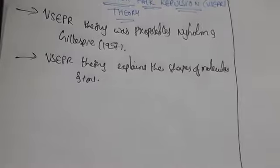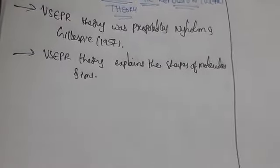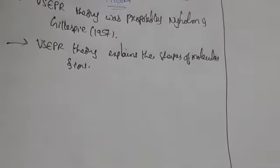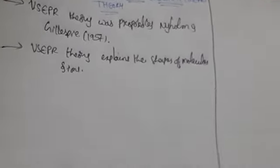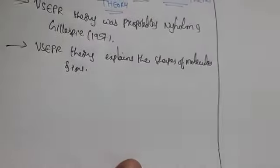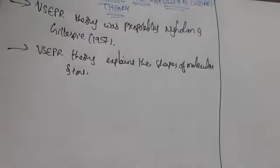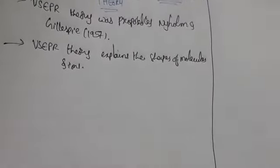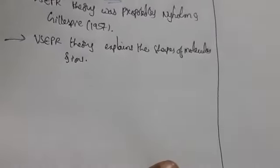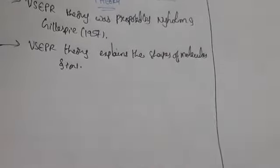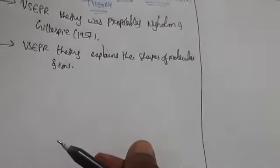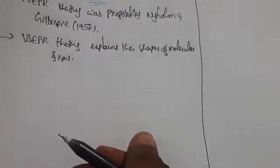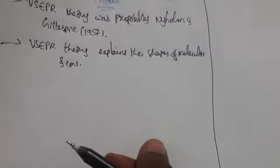According to VSEPR theory, the shape of a molecule depends upon the number of pairs in the valence shell around the central atom, whether bonded or non-bonded. For example, in H2O, the central atom is O, surrounded by H atoms. The orbital which contains the bonded pair is called the localized orbital. The atom common in all bonds is called the central atom.